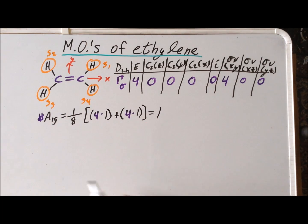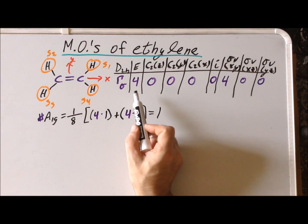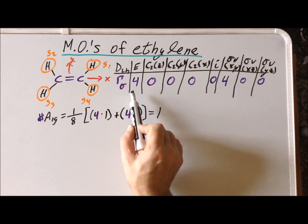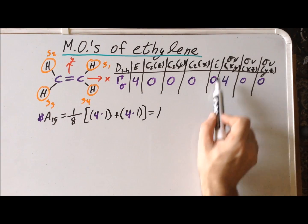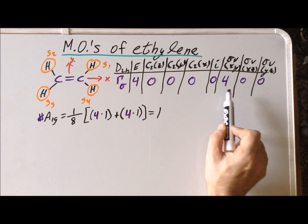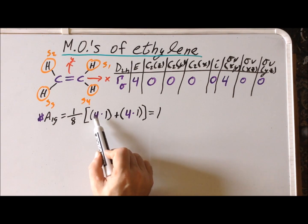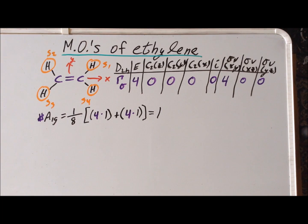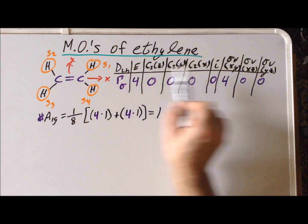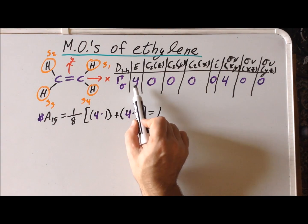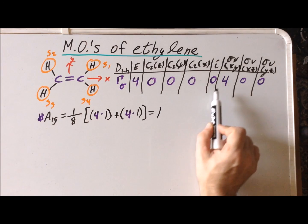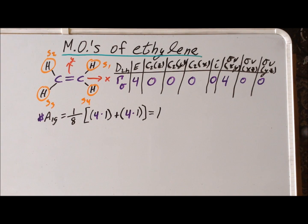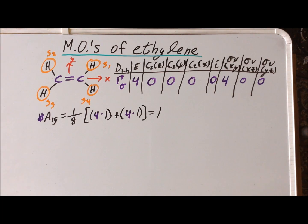To expedite work, we notice that in any cases where the character for E is a positive one but the character for sigma v xy is a negative one, we will end up getting terms like positive four and negative four, which turn out to be zero. So the only irreducible representations that will contribute are those that have a plus one character for both E and sigma v xy.